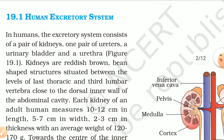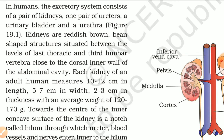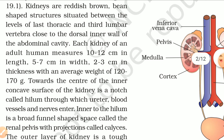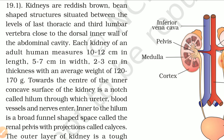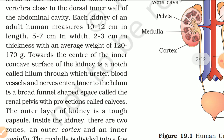19.1 Human Excretory System. In humans, the excretory system consists of a pair of kidneys, one pair of ureters, a urinary bladder, and a urethra. Kidneys are reddish-brown, bean-shaped structures situated between the levels of the last thoracic and third lumbar vertebra, close to the dorsal inner wall of the abdominal cavity. Each kidney of an adult human measures 10-12 cm in length, 5-7 cm in width, 2-3 cm in thickness, with an average weight of 120-170 grams. Towards the center of the inner concave surface of the kidney is a notch called the hilum through which the ureter, blood vessels, and nerves enter.